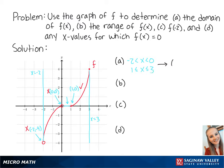So the domain is equal to the interval negative 2 to 0 with parentheses on both endpoints because they are excluded, and the interval 1 to 3 with brackets on both endpoints because they are included.